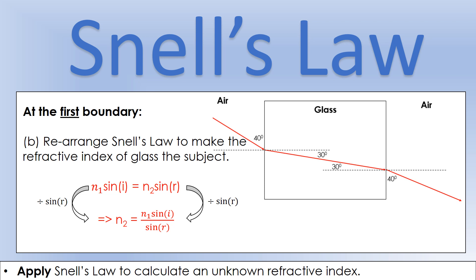The thing we don't know is the refractive index of glass, so we're going to rearrange Snell's law to make the refractive index of glass the subject. We're going to make n2 the subject by dividing both sides of the equation by sine r, which leaves n2 by itself.